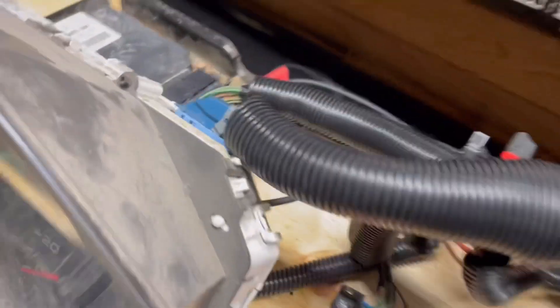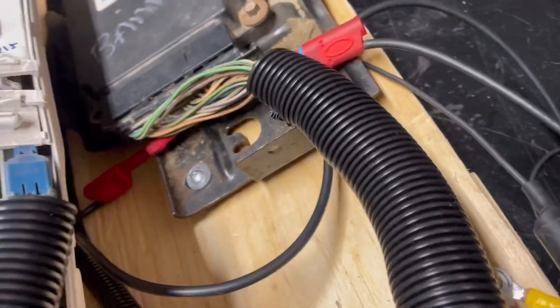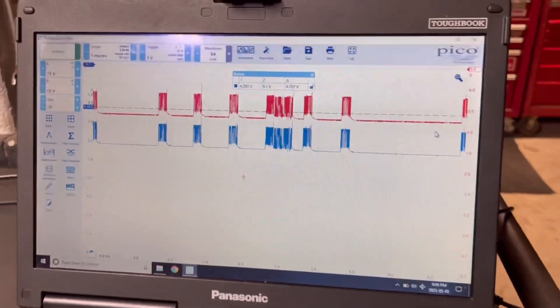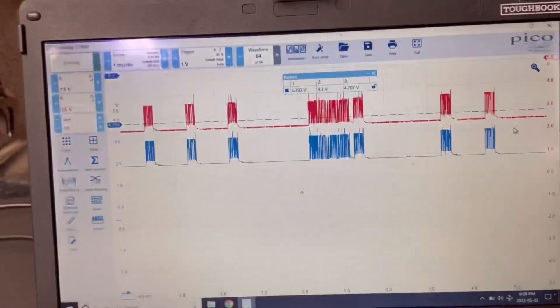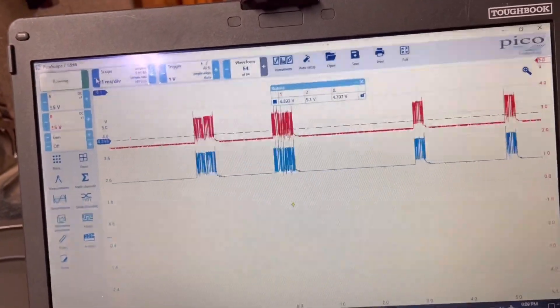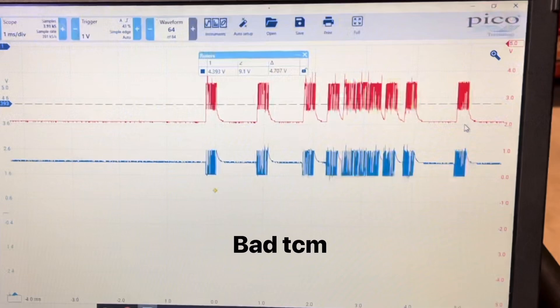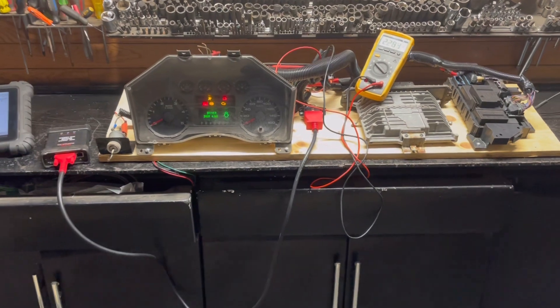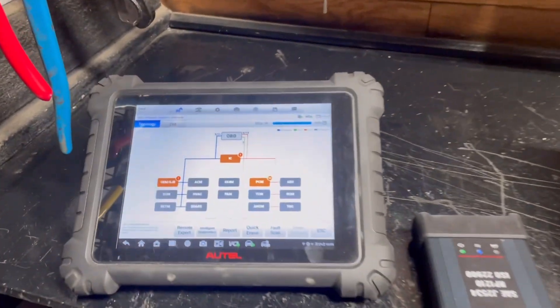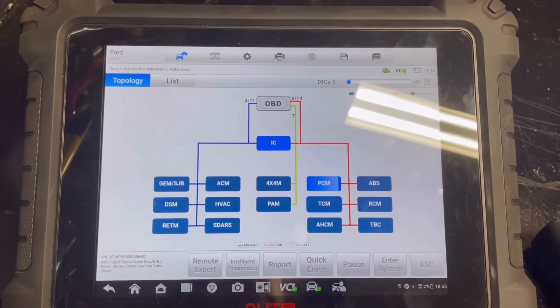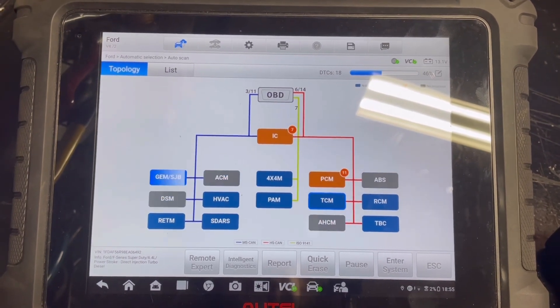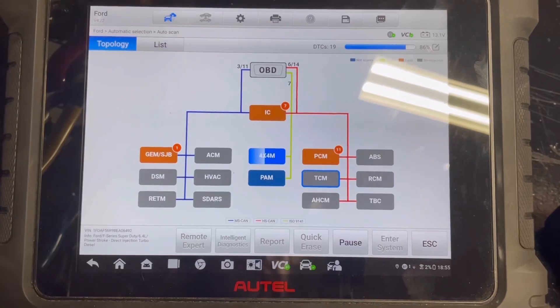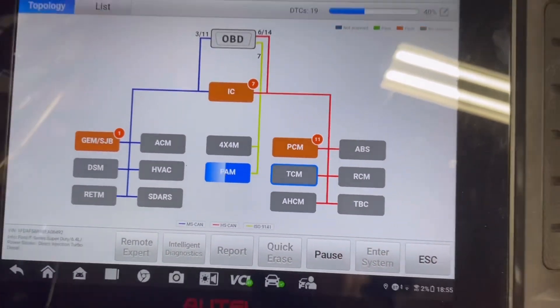So we got the transmission control module hooked up to the test bench. We got our probes hooked up: CAN high, CAN low. This is going to help us visualize what's actually happening inside of those wires, behind the curtains. I want to say that having an oscilloscope handy is essential to being able to properly diagnose problems like this. So here guys we're just going to confirm that we still have no communication with our transmission control module via the topology chart. And as you can see, the TCM is still offline.